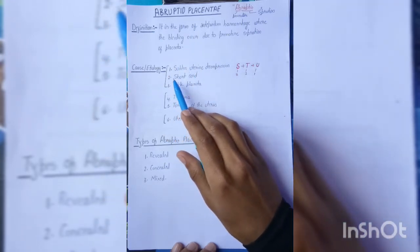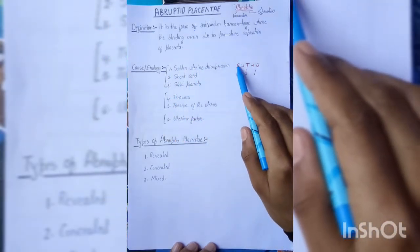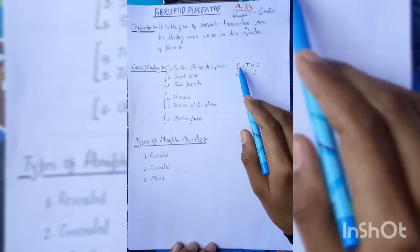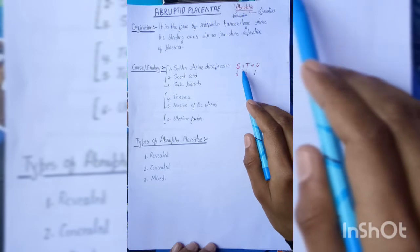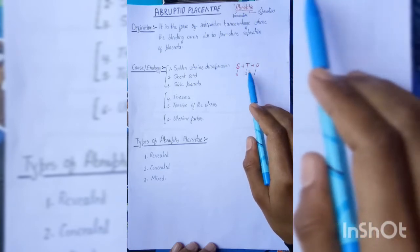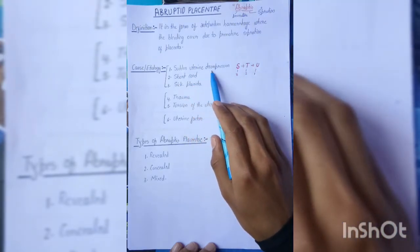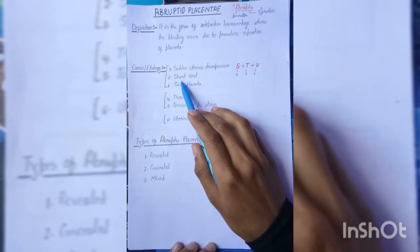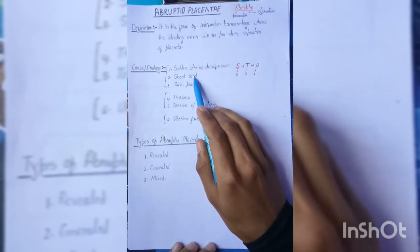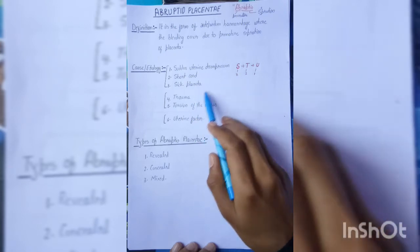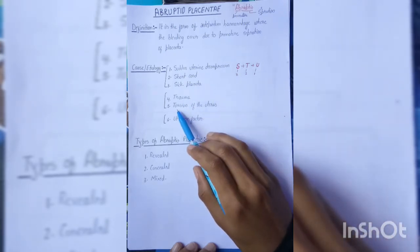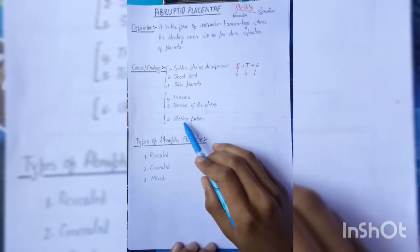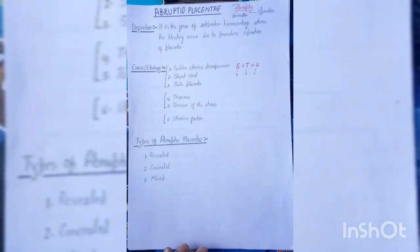The causes of abruptio placenta can be remembered using alphabet sequence S-T-U. S: sudden uterine decompression, short cord, and sick placenta. T: trauma (accidental situations), torsion of the uterus, and uterine factors. U: various uterine factors that can cause abruptio placenta.